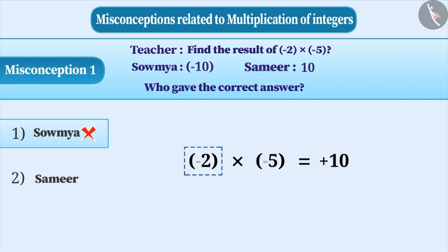Thus, the correct result of minus 2 into minus 5 is obtained as plus 10. That means, Samir has given the correct answer.